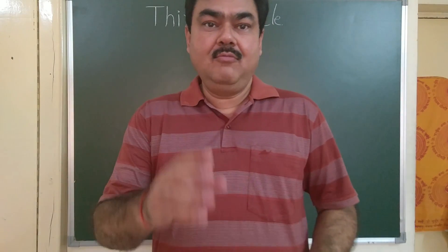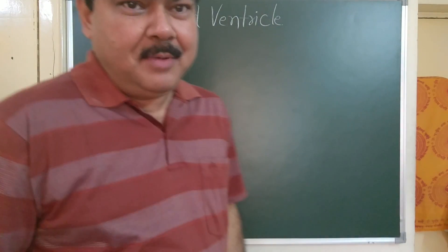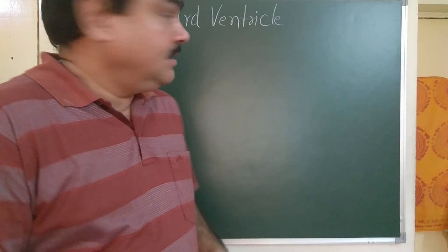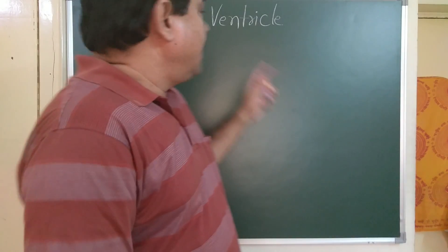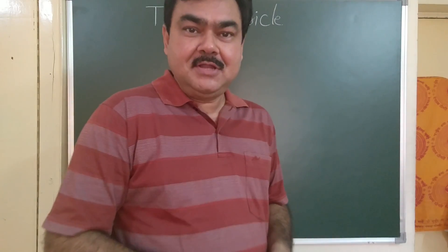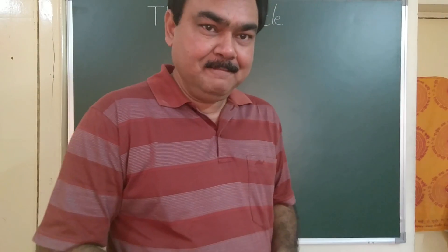Today we will discuss about the third ventricle. There are four ventricles present in the brain: two lateral ventricles, the third ventricle, and the fourth ventricle.